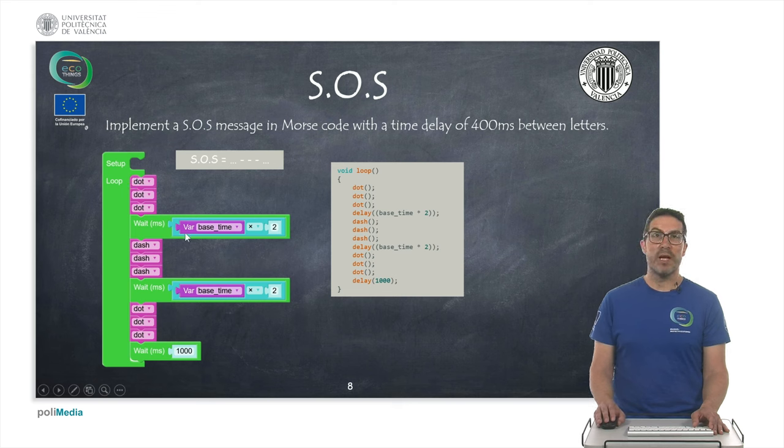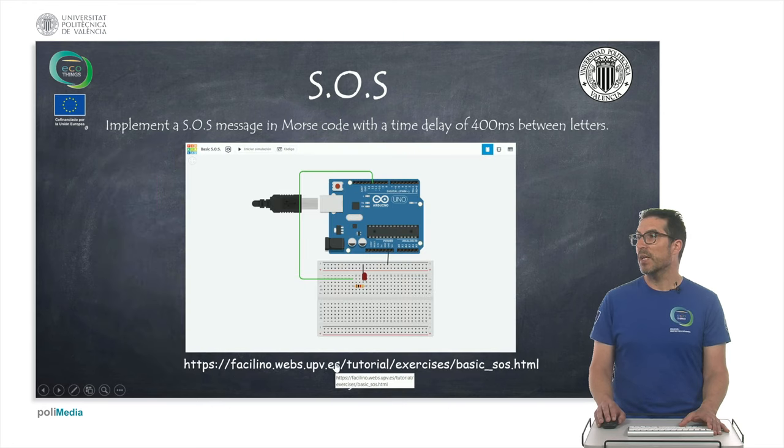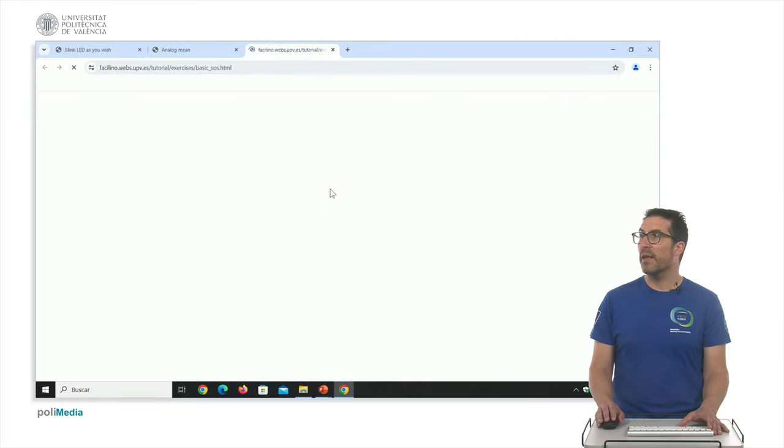That's why we use three consecutive dot functions here, we wait some time, we call the dash function three consecutive times again, and we call this function.